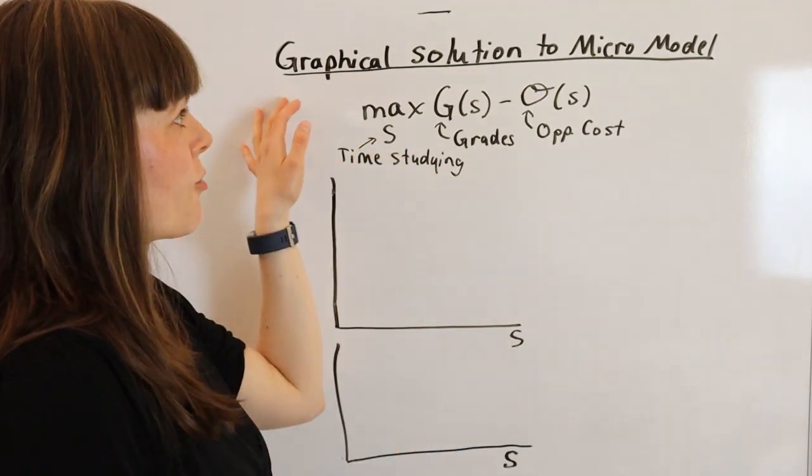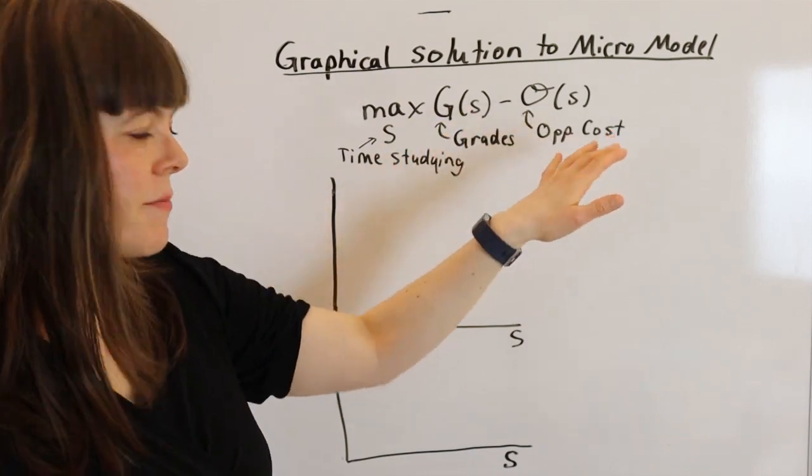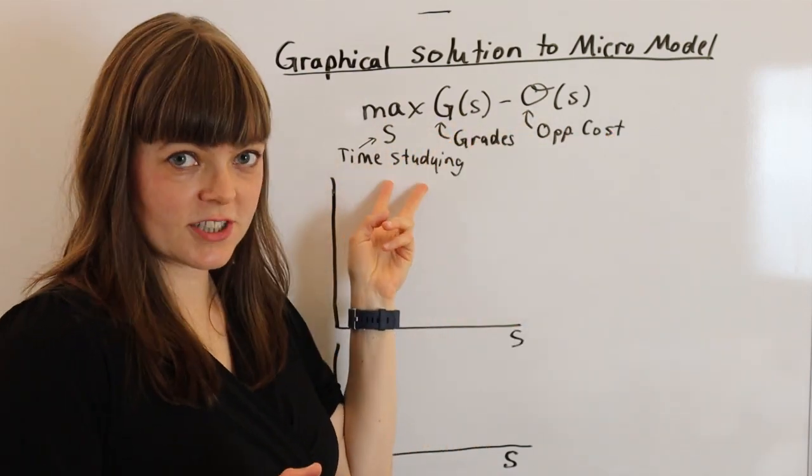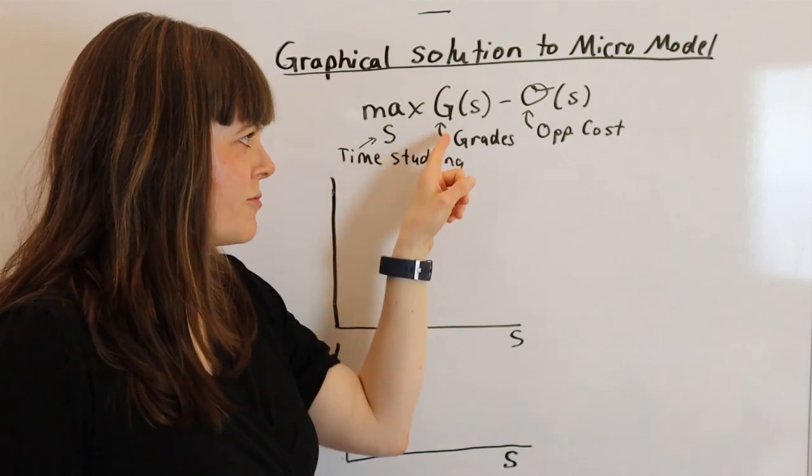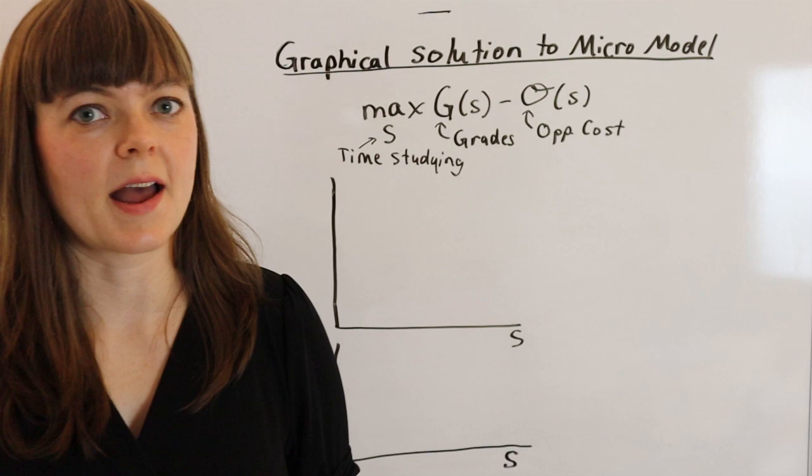In this video I'm going over a graphical solution to a microeconomic model. This is the model I've been building upon, the grades model, or the model of how much time you spend studying, where your objective function includes grades and your opportunity cost for that time.